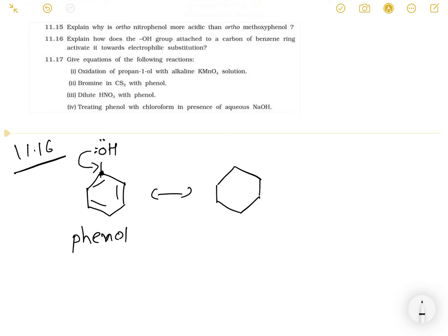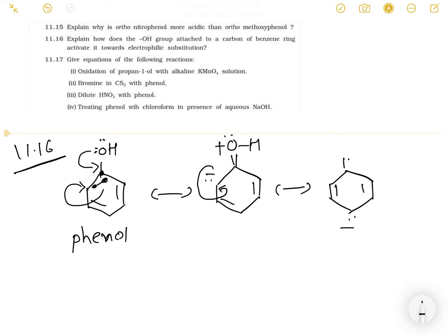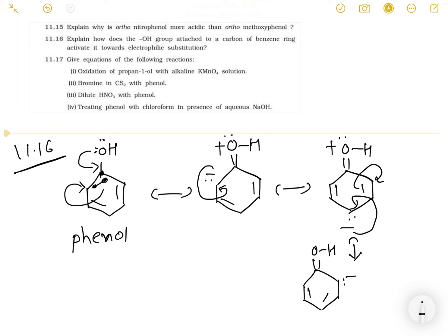The electron donation creates a shift: the double bond electrons move, oxygen's valency increases, a positive charge forms on oxygen, and the negative charge disperses into the ring. In the next step, the charge continues to disperse through the conjugated carbons of the ring. Finally, we get back the original structure of phenol.